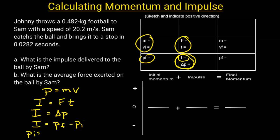So what that's saying is that the initial momentum plus the impulse equals the final momentum. Understanding that will help us create a chart to organize all the data from the problem.